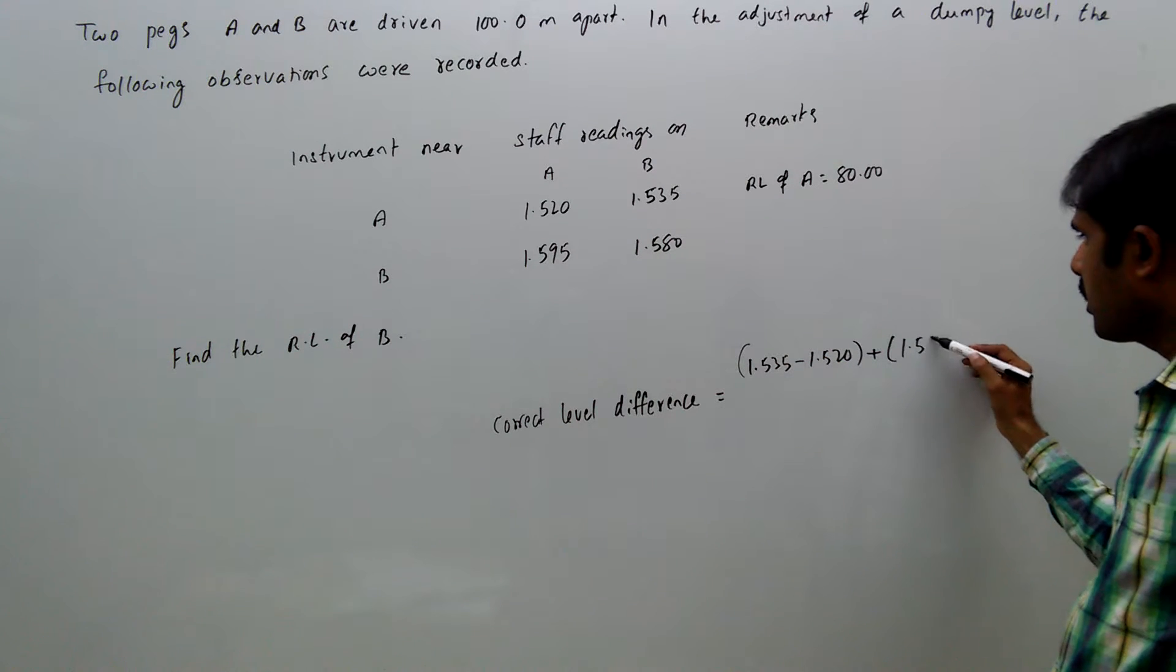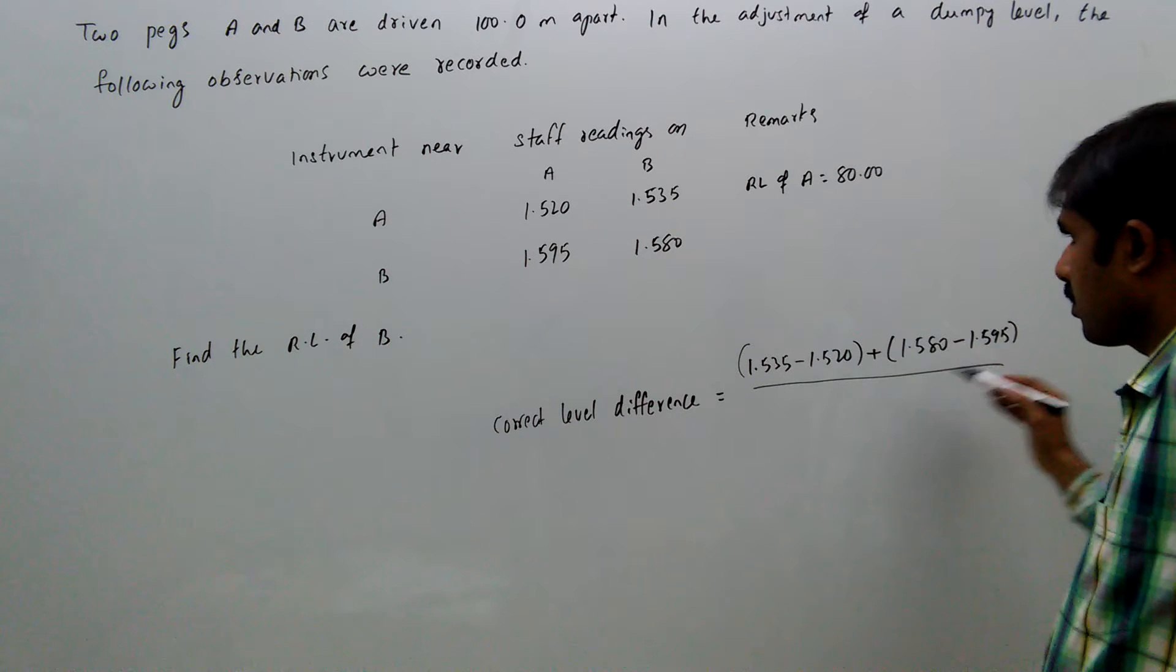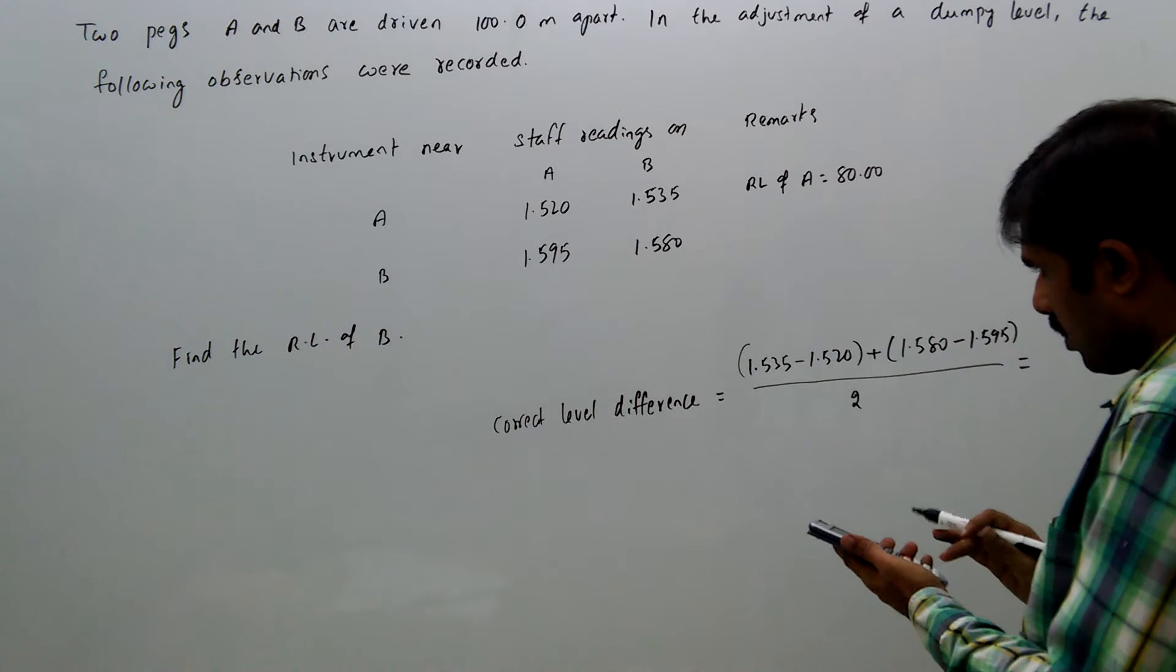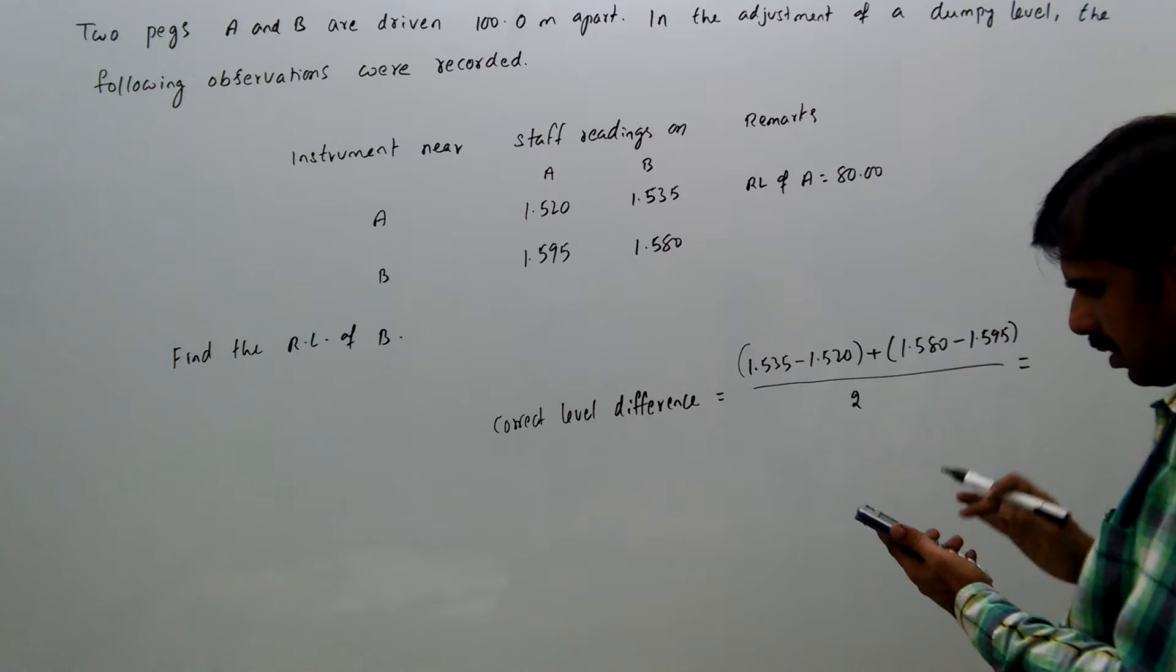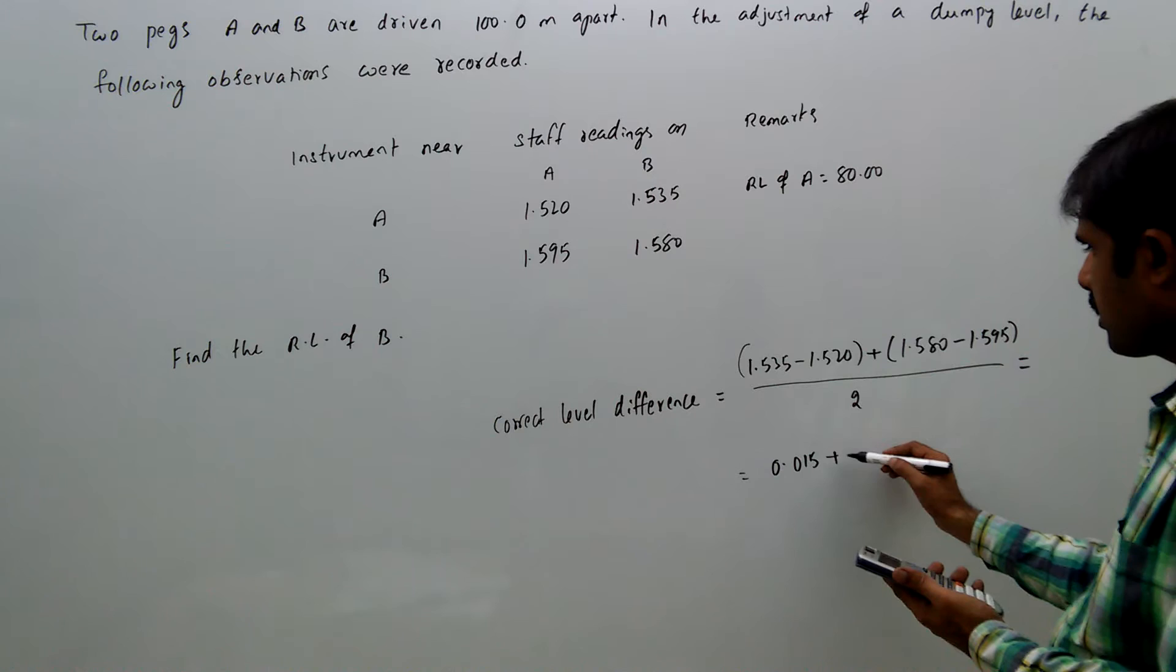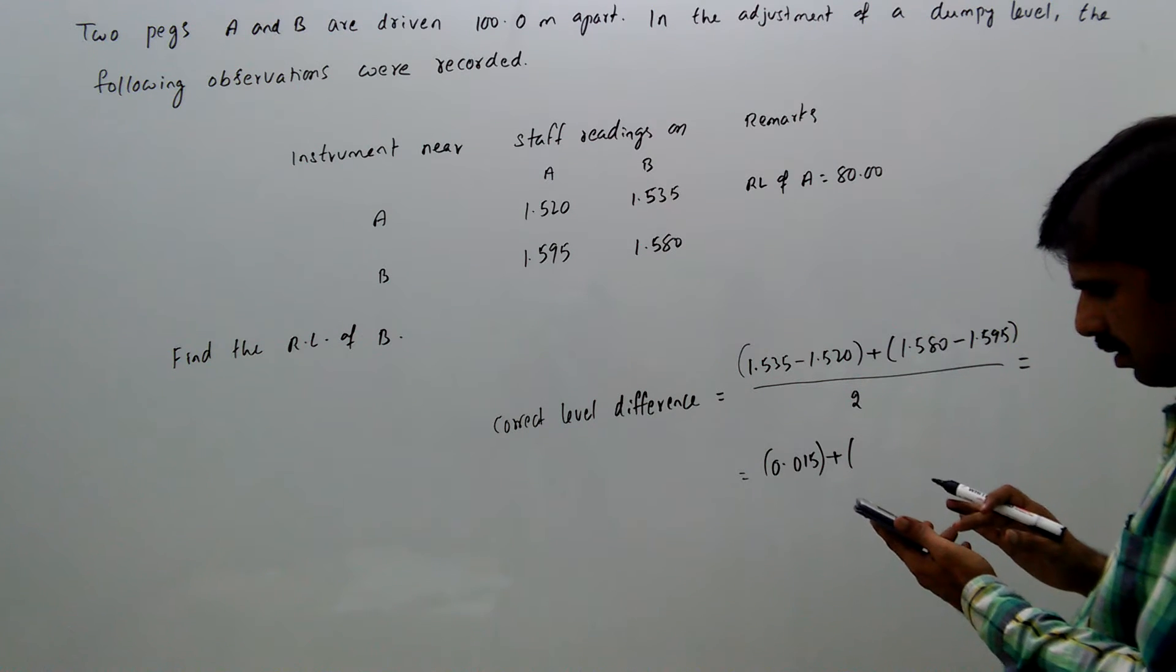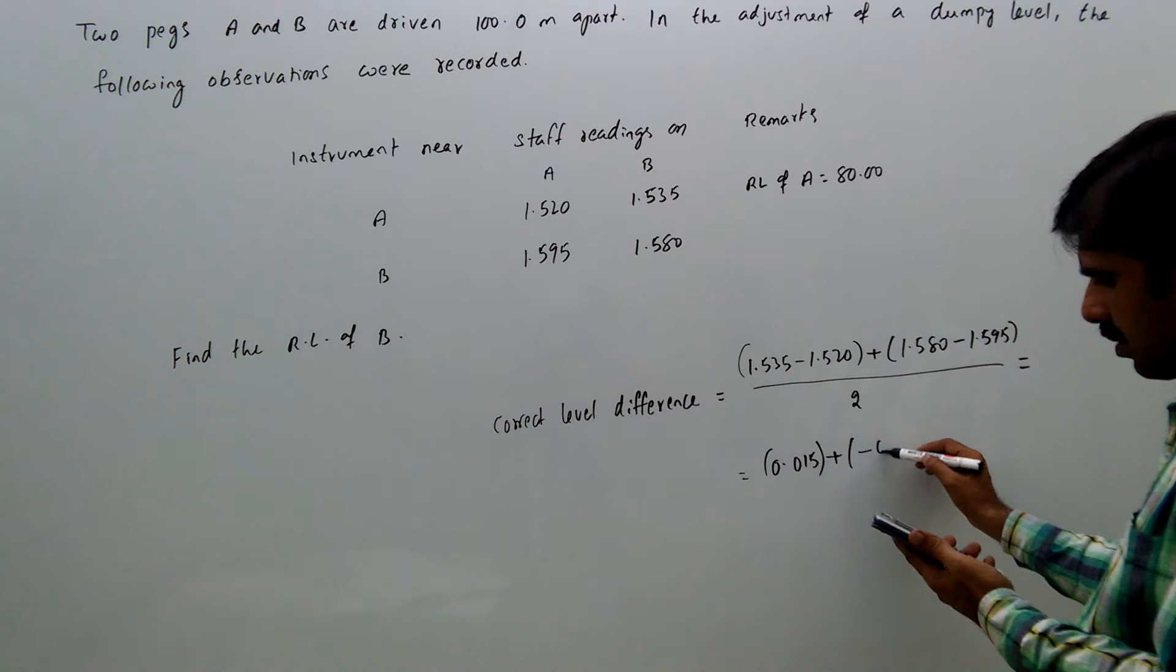1.580 minus 1.595 by 2. This gives minus 0.015 plus minus 0.015.